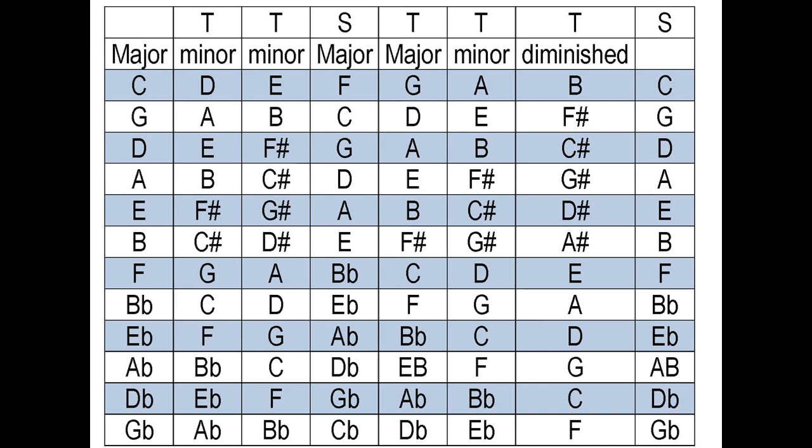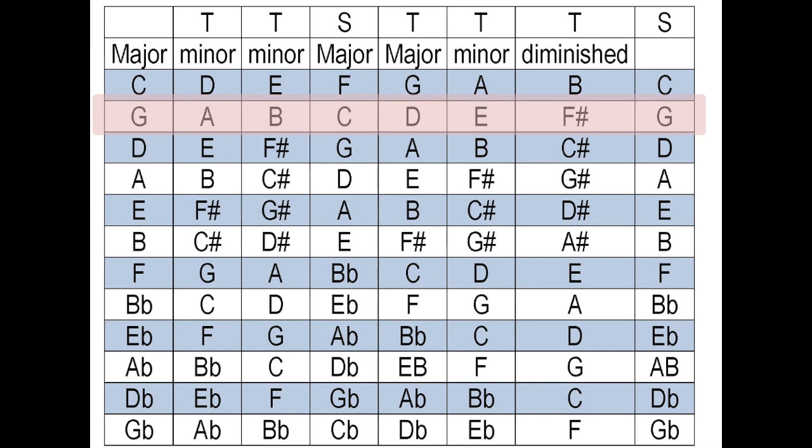Now, let's say you want to figure out what key your song is in. You have no idea — you've always played these chords but don't know what key. So first, just think of the chords in your song. Let's say your song has a G, C, and D. Look across your second row and find the three majors: major in the first column, major in the fourth column, and major in the fifth column. Scan down those major columns and find what key has a G, C, and D in it. As you'll notice, it's the second one — it's the G major scale. So now you know your song's in the key of G, and you also have these other chords you can insert into your song: an A minor, a B minor, an E minor, and an F sharp diminished.